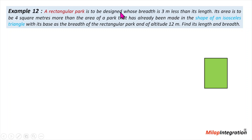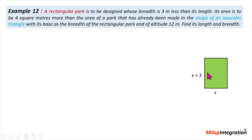The breadth is 3 meters less than its length. Suppose its breadth is x. Naturally, breadth is less than length, so the length would be x plus 3.